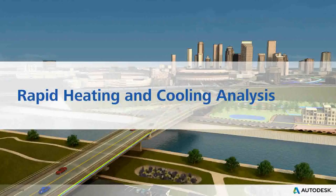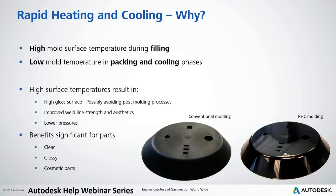Moving to rapid heating and cooling analysis. The idea is to have a high mold surface temperature during filling and a low mold temperature during packing and cooling phases, resulting in a high gloss surface. Comparing the same part produced with a normal process versus rapid heating and cooling, the surface aesthetics is much better with this technology. It is quite widely used in the automotive industry, typically applied only to the fixed plate side — the side that should have the high gloss finish.